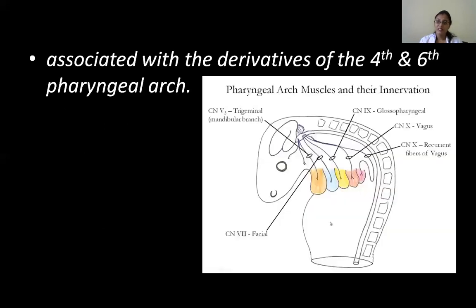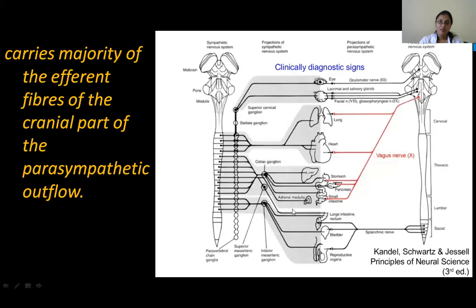In terms of development, the pharyngeal arches four and six are innervated by the vagus. The main branches are the superior laryngeal and the recurrent laryngeal nerve. The vagus is branchiomotor to muscles derived from pharyngeal arches four and six. The other motor component is the parasympathetic system.